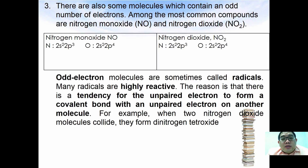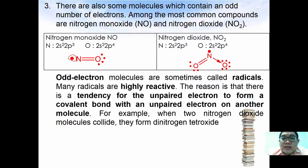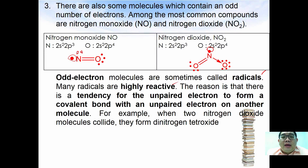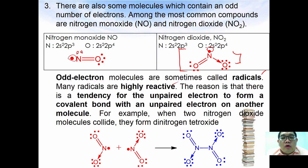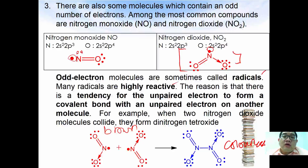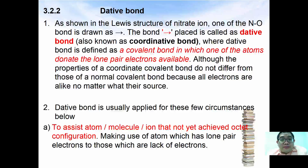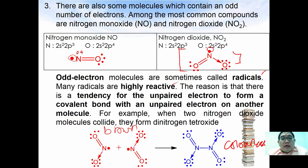Some molecules contain an odd number of electrons. Among the most common are nitrogen monoxide (NO) and nitrogen dioxide (NO₂). In the Lewis structure of nitrogen monoxide there is a single unpaired electron, and nitrogen dioxide also has a single unpaired electron plus a lone pair. These odd-electron species are called radicals and are highly reactive, because there is a tendency for the unpaired electron to form a covalent bond with another unpaired electron. For example, when two molecules of nitrogen dioxide combine, they form dinitrogen tetraoxide (N₂O₄). Nitrogen dioxide is brown in color, while dinitrogen tetraoxide is a colorless gas — a pair commonly discussed in chemical equilibria.